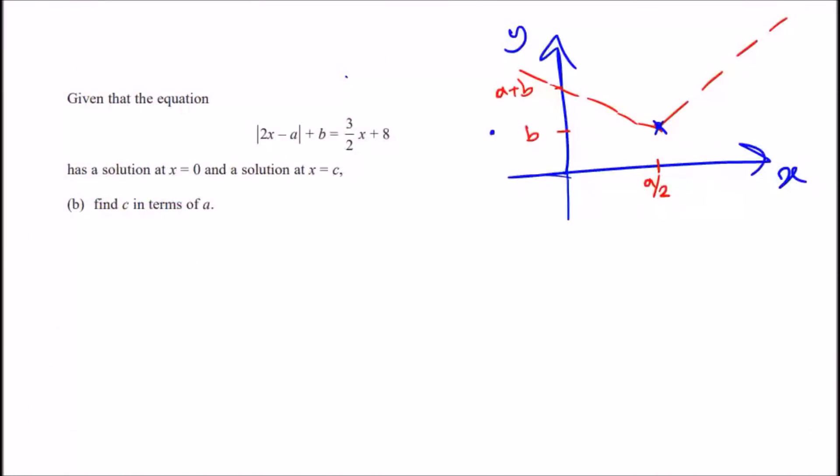Okay guys, here we go part b. Now given that the equation which is the mod of 2x minus a plus b, which I've graphed on the right side by the way, and also 3 over 2x plus 8, has a solution at x equals 0 and x equals c, find c in terms of a.